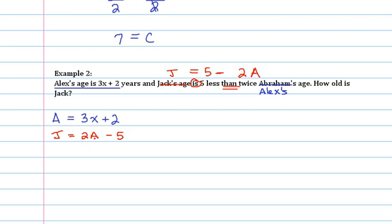Now all we have to do from this point on is substitute what A is into Jack's equation. So if we do this, we're now going to have two times whatever Alex's age is minus five. But remember, they said at the beginning of the story that Alex was 3x, 3x plus 2. Now from here, I encourage you to pause the video. Try to simplify this on your own and see if you end up with the same answer that I get.